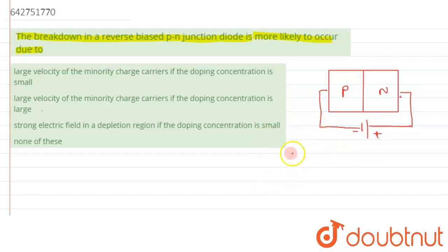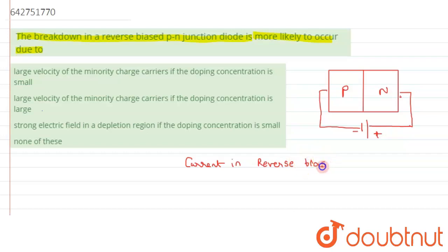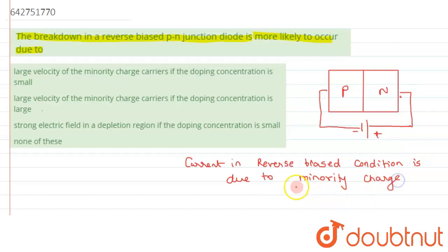In reverse bias, the minority charge carriers constitute the current. Current in reverse biased condition is due to minority charge carriers. In the P-type, electrons behave as minority charge carriers, and in the N-type, holes behave as minority charge carriers.